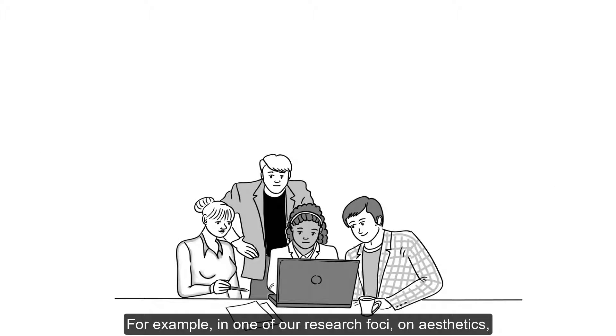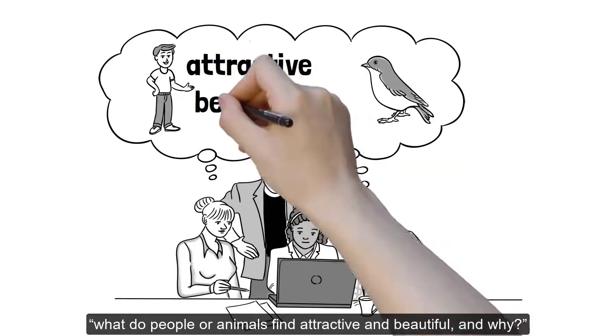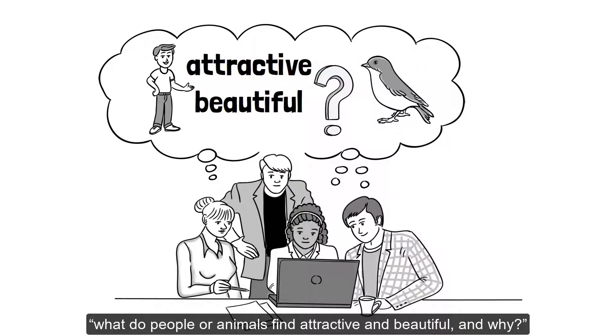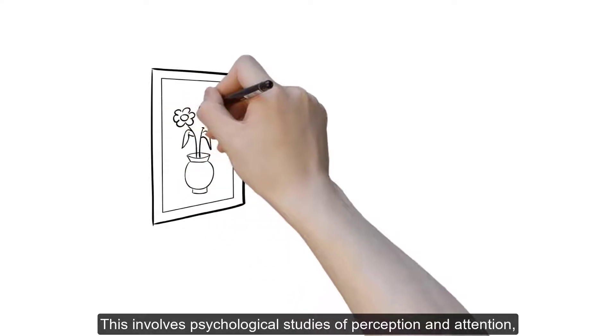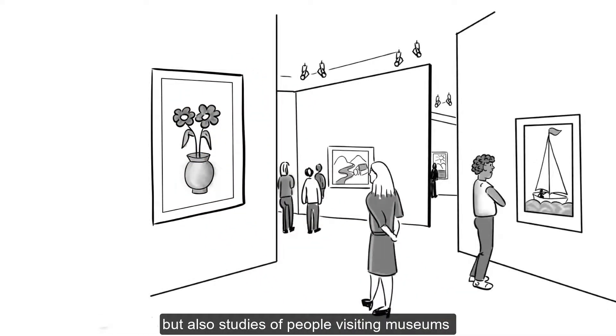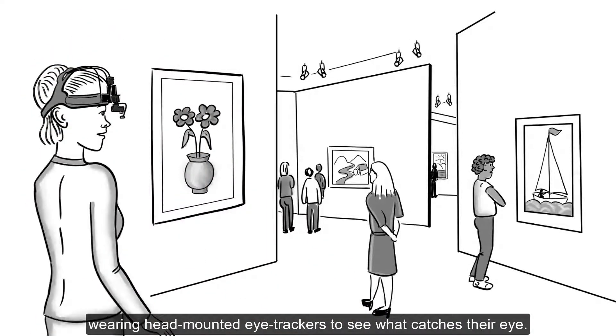For example, in one of our research foci on aesthetics, we ask questions such as, what do people or animals find attractive and beautiful, and why? This involves psychological studies of perception and attention, but also studies of people visiting museums wearing head-mounted eye trackers to see what catches their eye.